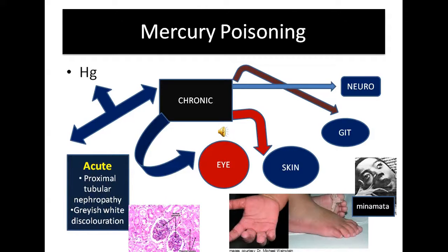In FSM, toxicology is one of the most important chapters, and we are going to discuss mercury poisoning. We have to remember that mercury as it is not poisonous — it is the mercury vapor which is the most hazardous one. Among the mercury salts, the mercuric salts are much more poisonous than the mercurous salts, and mercuric chloride is the most poisonous of all.